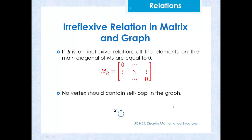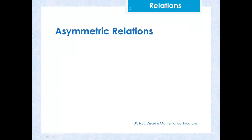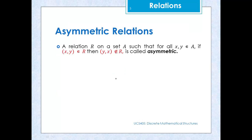Now let us see another property: asymmetric relation. If we have a relation R on a set A, then R is said to be asymmetric if whenever an ordered pair (x, y) belongs to R, then the ordered pair (y, x) must not belong to R. That means if (x,y) is present, then (y,x) should not be present.